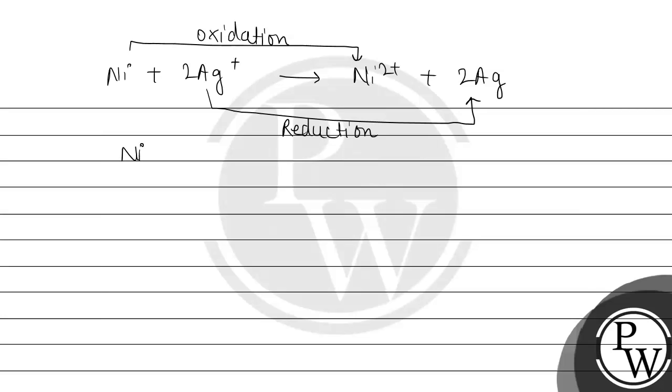If we write the half reactions, it will be: nickel gives Ni²⁺ plus 2 electrons, and Ag⁺ plus 1 electron gives silver. So the overall reaction, multiply to get: nickel plus 2 Ag⁺ leads to the formation of Ni²⁺ plus 2 Ag, that is silver.